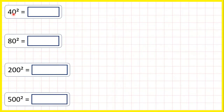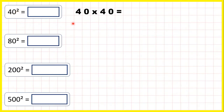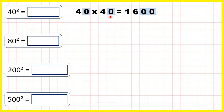Now let's try squaring multiples of 10 or 100. So first we have 40 squared, and remember this little 2, this squared symbol, means multiply the number by itself. So 40 squared, we need to work out 40 times 40. That's 1,600, because 4 times 4 is 16, and then if we have 2 end zeros in the multiplication, we need 2 end zeros in the answer.